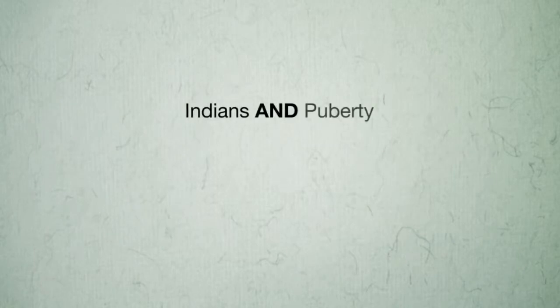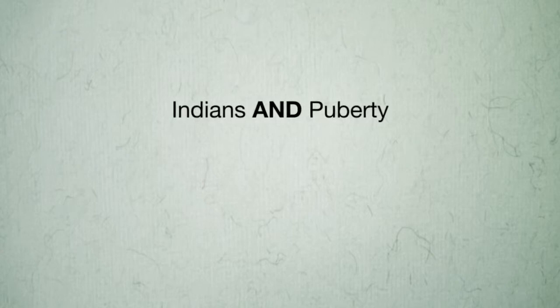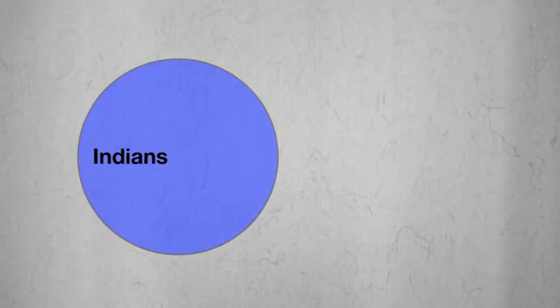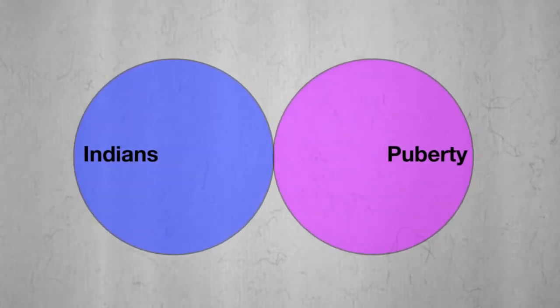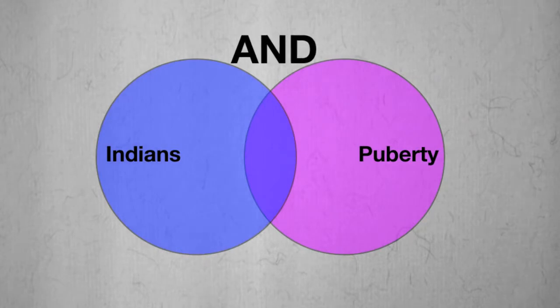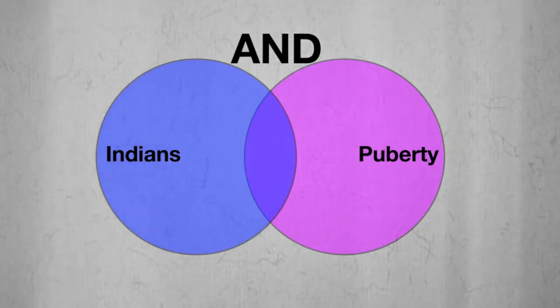Now let's look at the AND operator. The AND operator is used to combine terms that represent different facets. If I search for 'Indians AND puberty,' I'm telling the search engine to retrieve only those documents that have both the term 'Indians' and the term 'puberty.' To demonstrate this visually: this set contains all documents with the term 'Indians,' and this set contains all documents with the term 'puberty.' The dark section in the middle represents the documents that contain both the terms 'Indians' and 'puberty.' Using the AND operator narrows the scope of your search and eliminates irrelevant results.